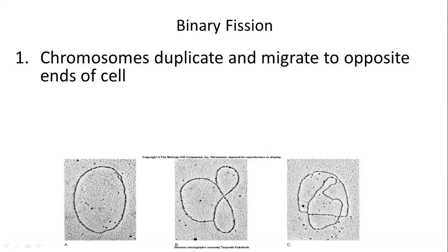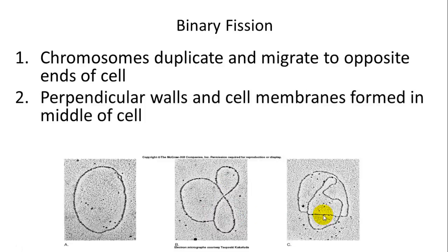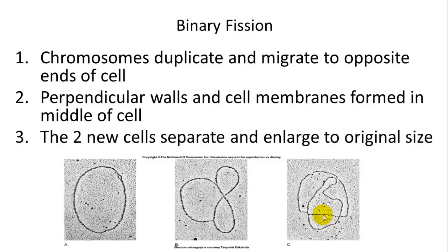The process of binary fission starts with duplication of the chromosome, beginning at a site of origin and going in both directions until it hits the site of termination — giving you two full chromosomes. Once those chromosomes are made, they go to opposite ends of the cell as it enlarges, and then walls and cell membranes form between the two chromosomes to create two new cells, which separate and enlarge to their original size.